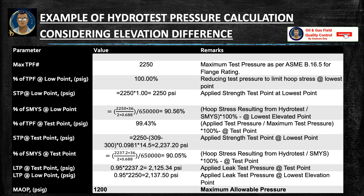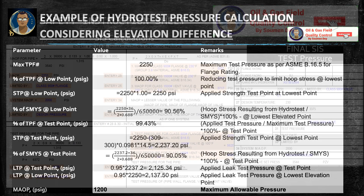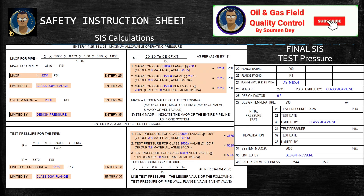For your information, the maximum allowable operating pressure (MAOP) considered during design is 1,200 psi. Here is an example of a safety instruction sheet for a pipeline — on the right side the test pressure is 3,375 psi, and on the left side you can see how the pressure has been calculated for different thicknesses of various components present in the hydro test system.